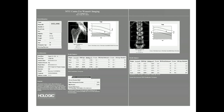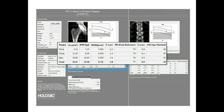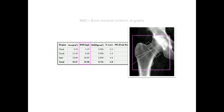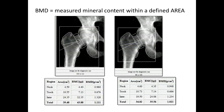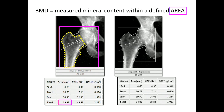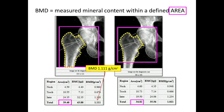Let's take a closer look at the tabular data obtained in a postmenopausal woman. Bone mineral content in grams divided by the area in centimeters squared yields the bone mineral density in grams per centimeter squared. DEXA provides an areal bone mineral density measurement — the measured mineral content within a defined area. This area is defined by the region of interest placed by the machine or the technologist, and the larger the area, potentially the greater the measured bone mineral density.